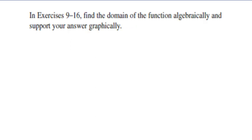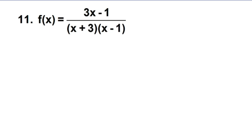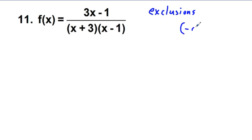In the last video lesson, we did the odd number problem 9. And this is: find the domain of the function algebraically and support your answer graphically. So we look at problem 11. Basically, what we're looking for in finding the domain is exclusions. If we find our exclusions, we know that everything else is going to be part of the domain — find what the domain cannot be, and everything else is the domain. If there are no exclusions, we're going to have negative infinity to infinity.